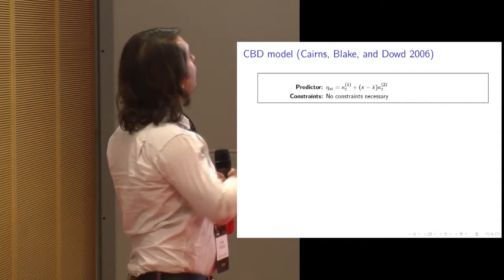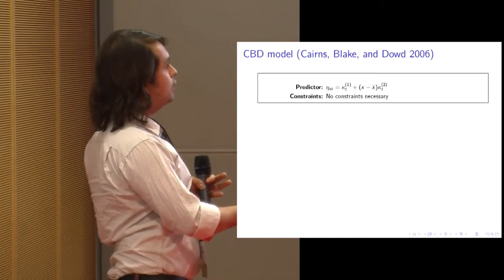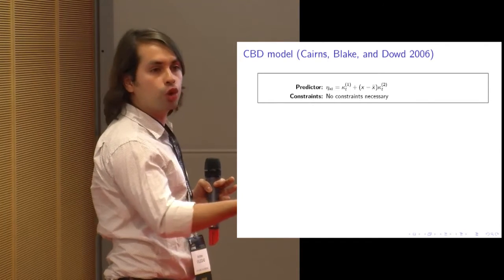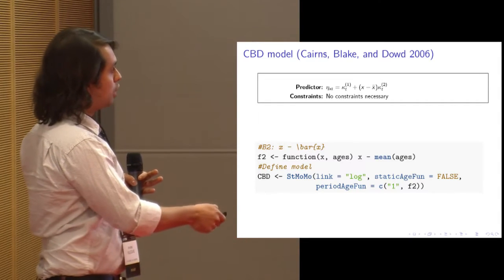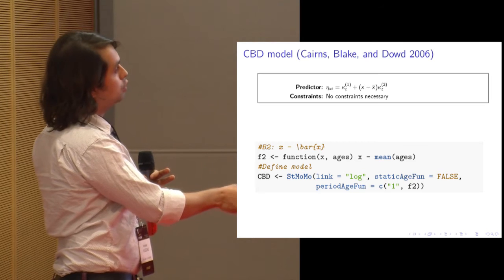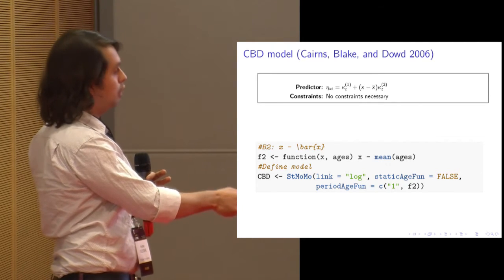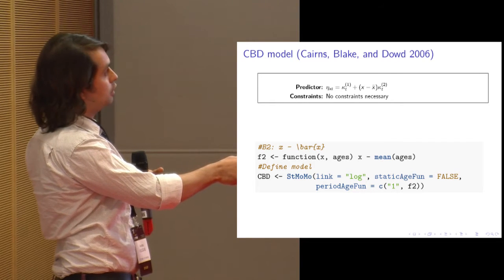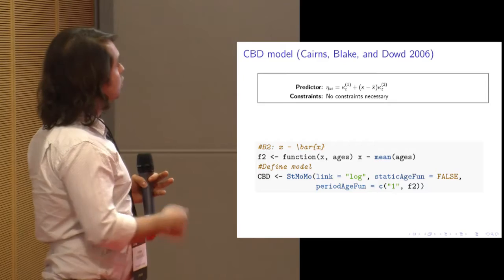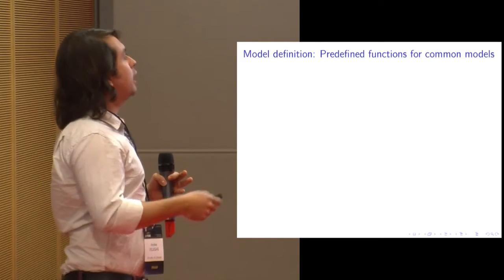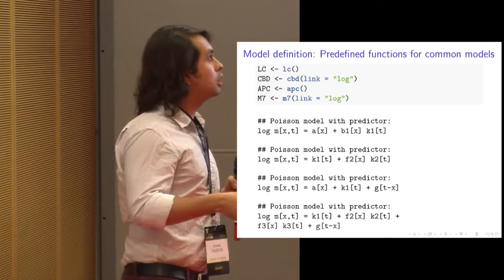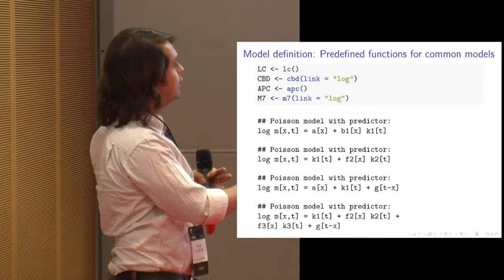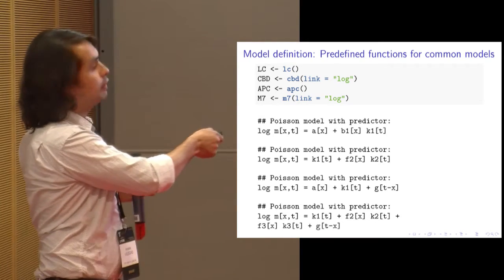For the CBD model, you have two kappa terms with predefined age-modulating functions and no constraints needed. You define f2 as x minus the mean of the ages, specify a logit link, no alpha-x term, and two period functions. Since many models are widely used, StMoMo provides predefined functions: the lc function for Lee-Carter, the cbd function for CBD, and equivalent functions for APC and M7.